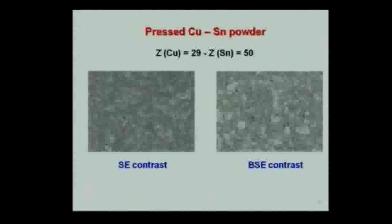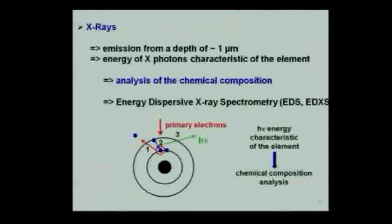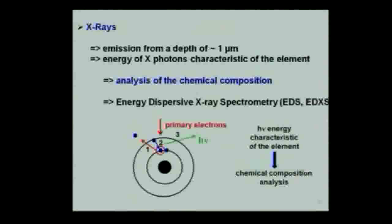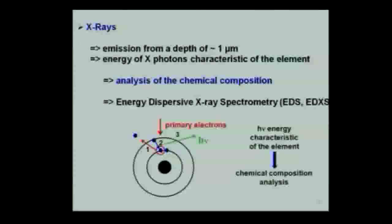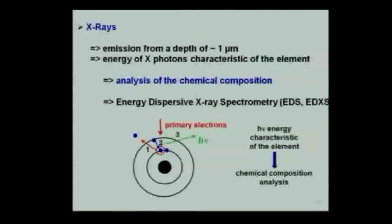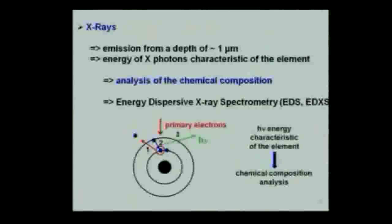The third signal of interest is X-rays, emitted from a depth of about one micrometer. The energy of the X-ray photons is characteristic of the elements, so you can do chemical composition analysis. The primary electrons eject an electron from a core shell, and the energy difference is compensated by emission of an X-ray photon. The energy of this X-ray photon, h-nu, is characteristic of the element.